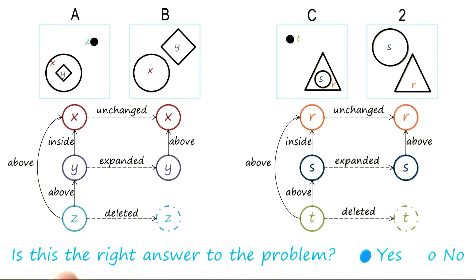It looks to me like the relationships at play in frame A and frame C are the same, and the relationships at play in frame B and frame 2 are the same.